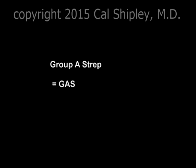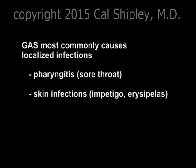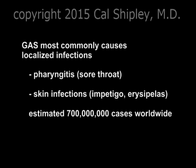Before we get to the animation, let's review a few facts about Group A Streptococcus. Group A Strep is also referred to by the acronym GAS, and it refers to a single bacterium, Streptococcus pyogenes. In the human body, GAS most commonly causes localized infections of the throat, also known as pharyngitis, and infections of the skin, such as erysipelas or impetigo. Localized GAS infections are common throughout the world and account for some 700 million cases annually. In the West, localized GAS infections rarely cause serious disease, particularly if they are promptly diagnosed and treated.